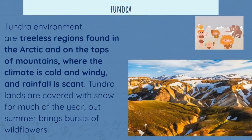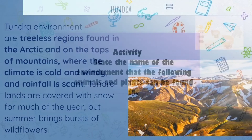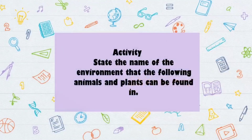Up next are tundra environments. These are treeless regions found in the Arctic and on the tops of mountains where the climate is cold and windy and rainfall is scant. These areas are normally covered with snow for much of the year, but summers can bring about a burst of wild flowers.